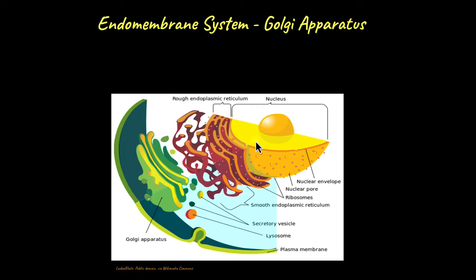In a previous video, we talked about the endomembrane system and how it is made up of a series of interconnected organelles that perform a coordinated task. The endomembrane system includes the endoplasmic reticulum, Golgi apparatus, lysosomes, and vacuoles.